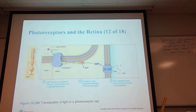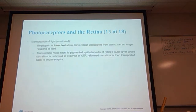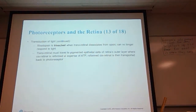During light, the opsin has separated, the trans-retinol has moved away, locking up the PDE, which prevents cGMP from being formed, which closes the sodium channel. Rhodopsin is bleached when trans-retinol dissociates from opsin and can no longer respond to light. Trans-retinol must travel to the pigmented epithelial cells of the retina's outer layer, where cis-retinol is reformed at the expense of ATP. The reformed cis-retinol is then transported back to the photoreceptor.